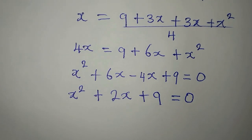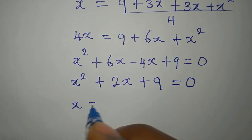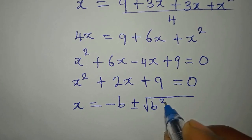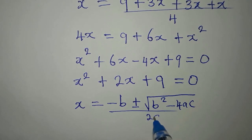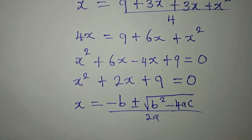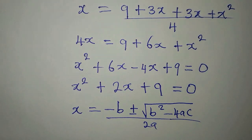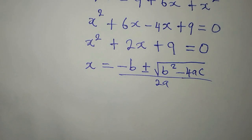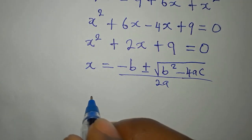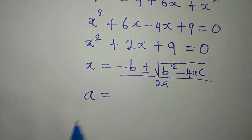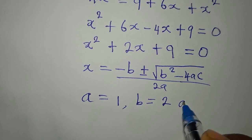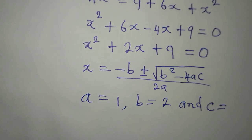Now we will solve this using the quadratic general formula: x equals minus b plus or minus the square root of b squared minus 4ac, all over 2a. The next thing is to get the values of a, b, and c. a is the coefficient of x squared, that is 1. b is the coefficient of x, that is 2. And c is the constant, which is 9.